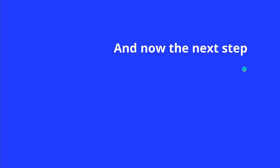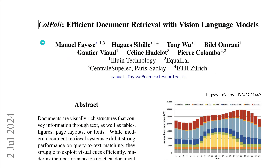And now, as we've seen two new systems, we are ready to take the next step. So here we go with ColPali — an efficient document retrieval with vision language model. We are stepping up the complexity, not like Microsoft with a language-only model, but now we combine vision and language model for our AI topology.